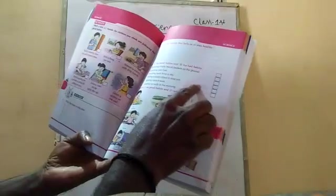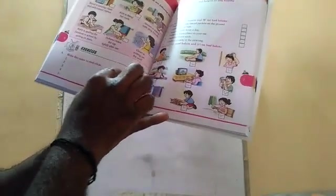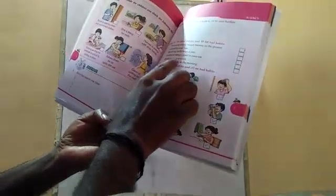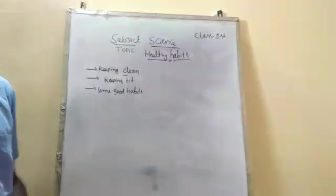This will be given in your worksheet. I will write the good and bad habits, and you will complete this. Write 5 ways to stay clean in the worksheets. Copy this and write in your test book. Put a tick mark on good habits and a cross mark on bad habits. In the next video we will discuss the next unit.